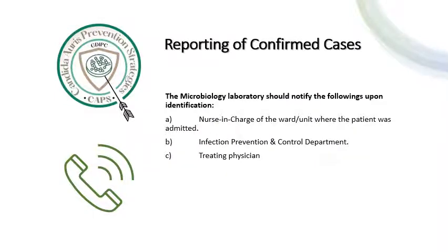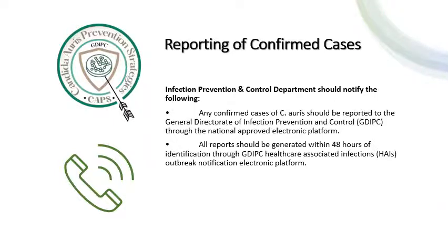Reporting of confirmed cases: any confirmed case of Candida Auris should be reported to the General Directorate of Infection Prevention and Control (GDIPC) through the National Approved Electronic Platform. All reports should be generated within 48 hours of identification through the GDIPC Healthcare-Associated Infections (HAI) Outbreak Notification Electronic Platform.